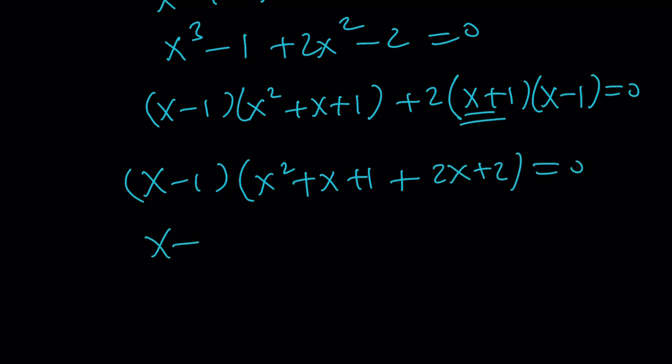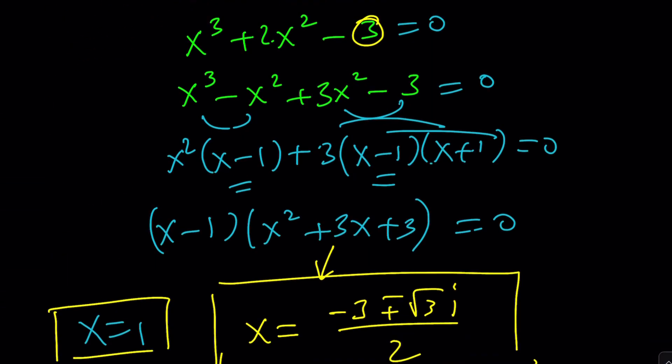And that gives me x minus 1, multiplied by x squared plus 3x plus 3 as before. Obviously, that should be no surprise, right?